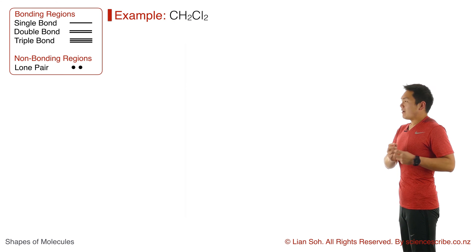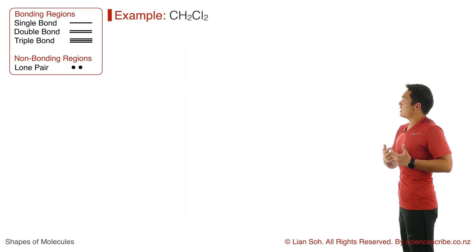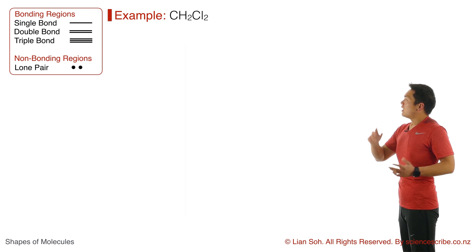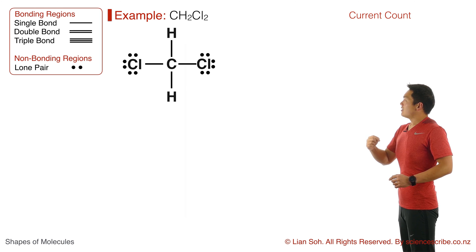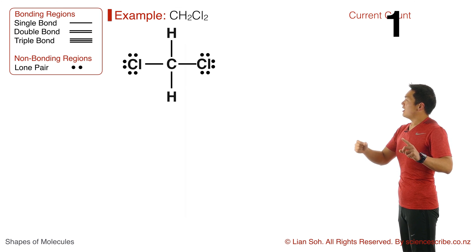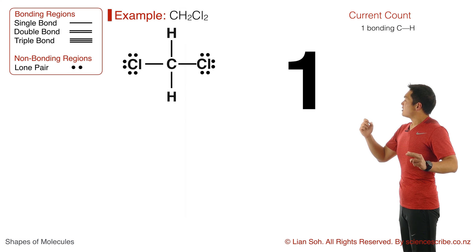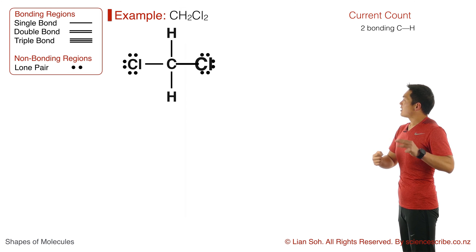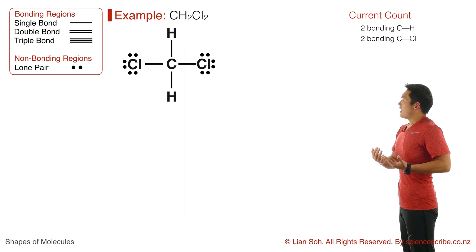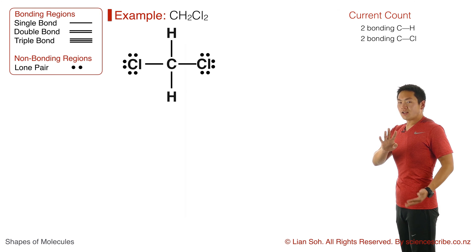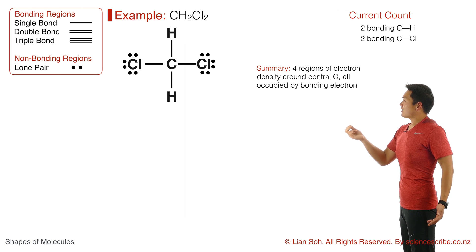Moving on to another example: finding the shape of dichloromethane, CH₂Cl₂. The Lewis diagram goes down and we count up the regions of electron density. There's a single bond to an H — that's one region — another single bond to an H, a single bond to a Cl, and another single bond to a Cl. So for dichloromethane, there are four regions of electron density around the central carbon atom.